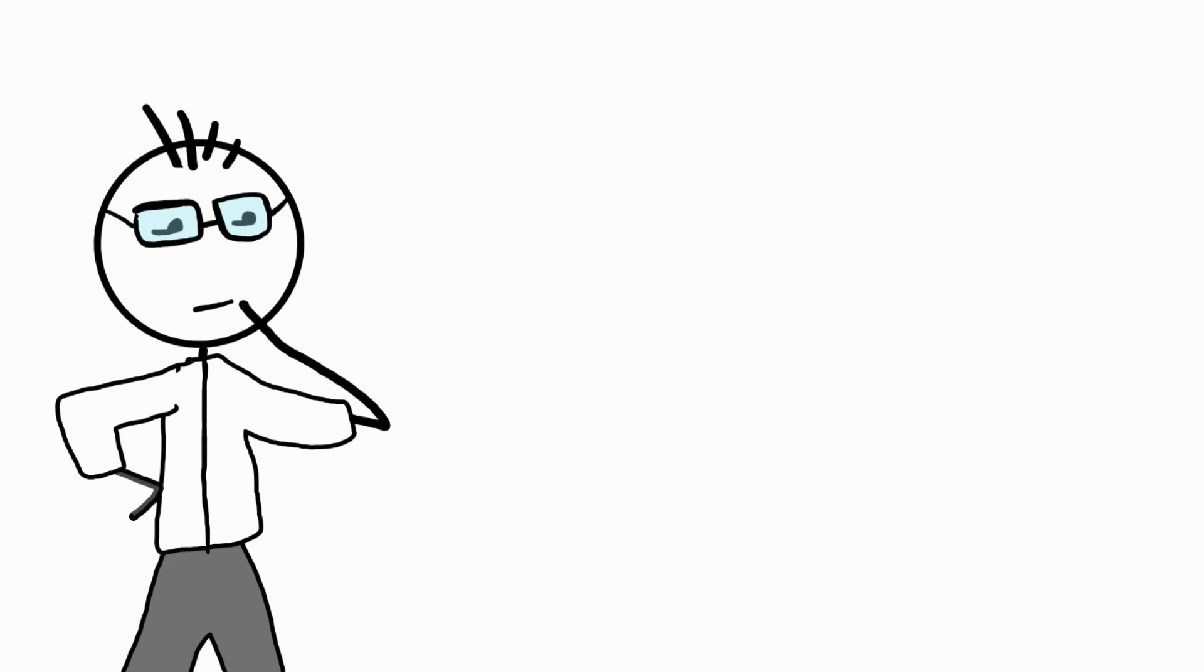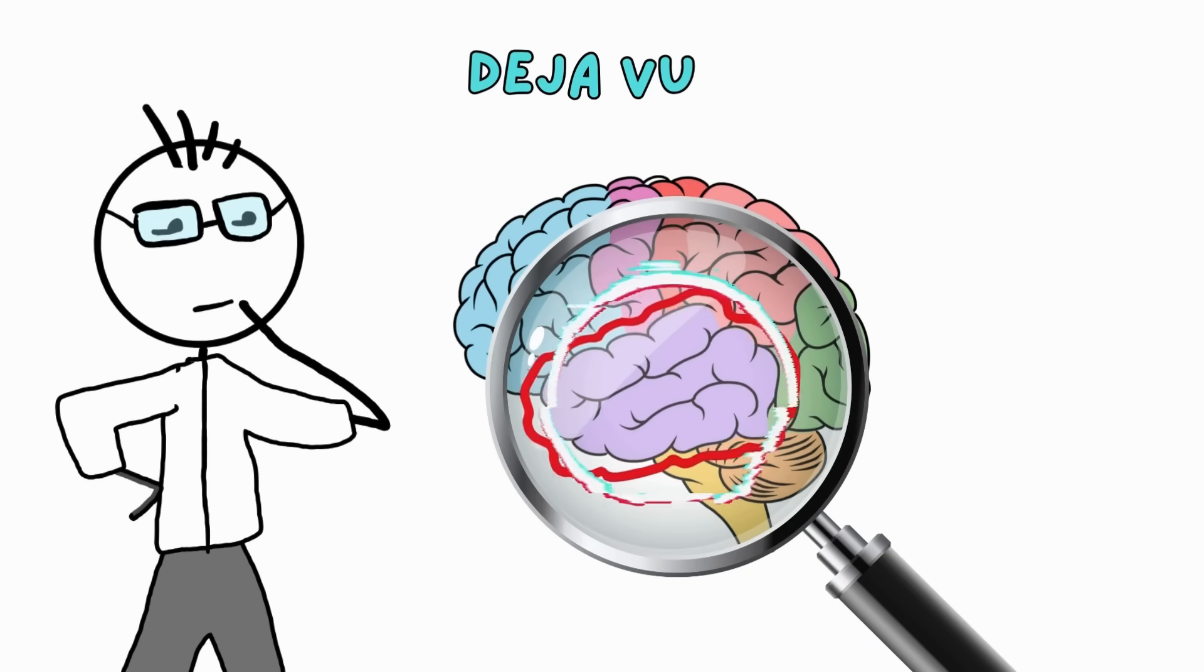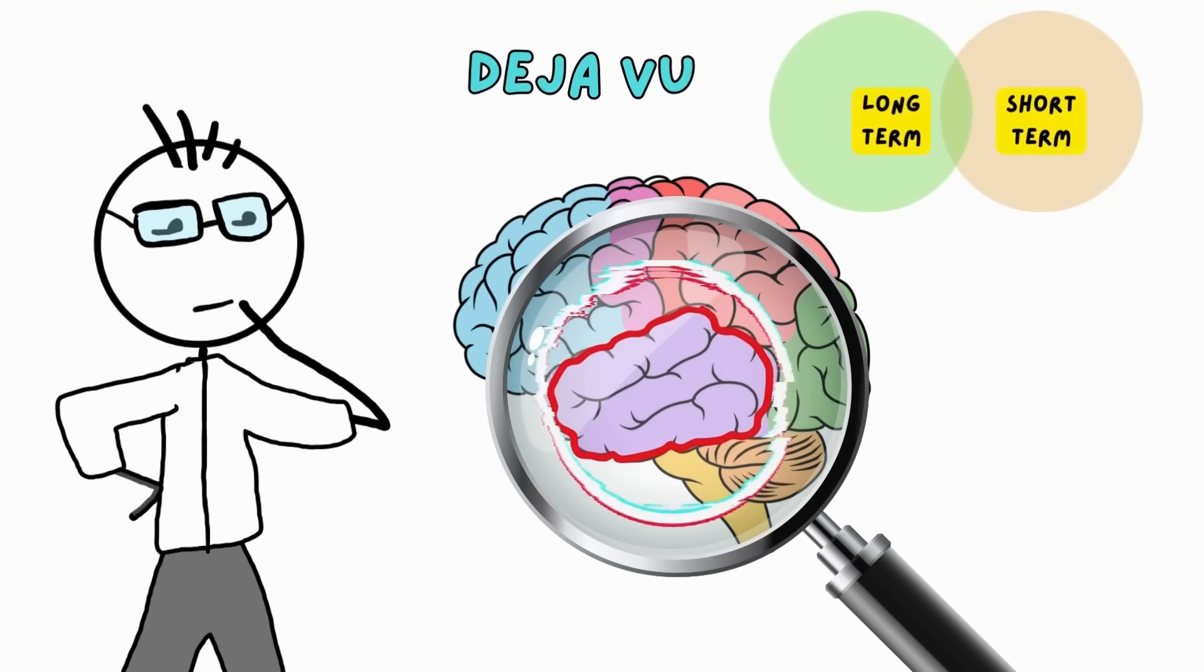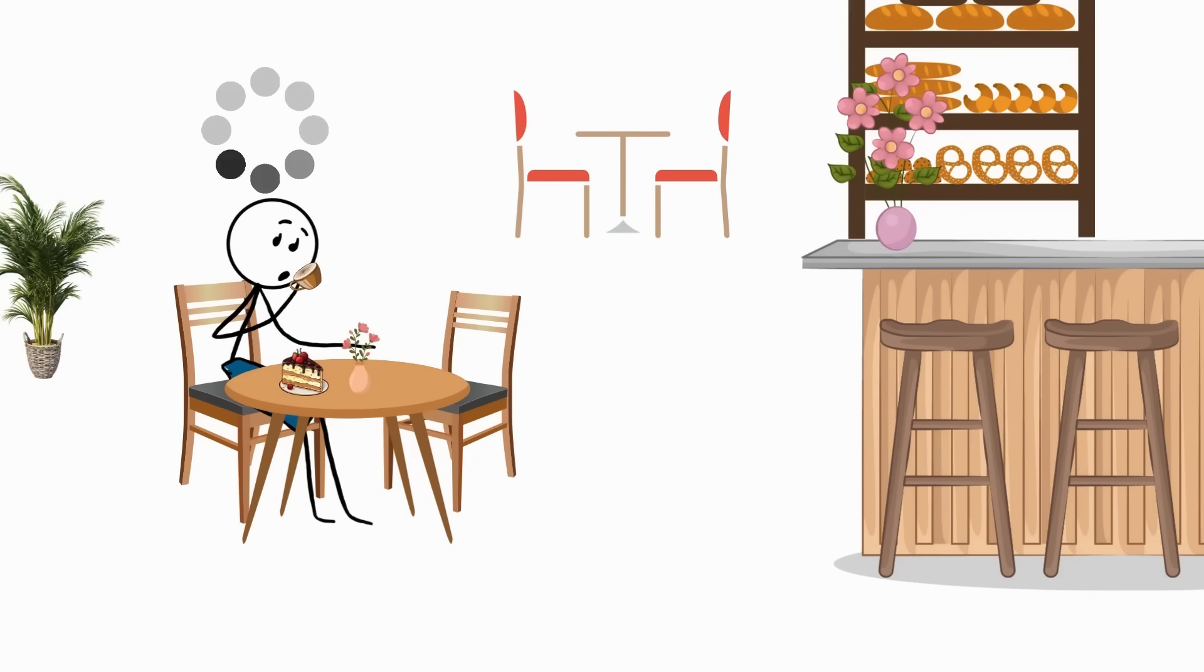Scientists believe that deja vu is your brain's temporal lobe glitching, resulting in a strange overlap between short-term and long-term memory signals. In short, you're not a psychic, but just experiencing real-life buffering.